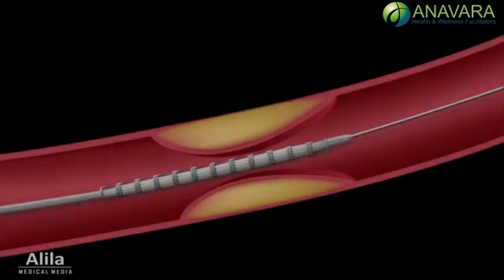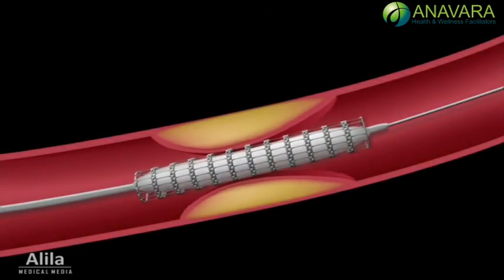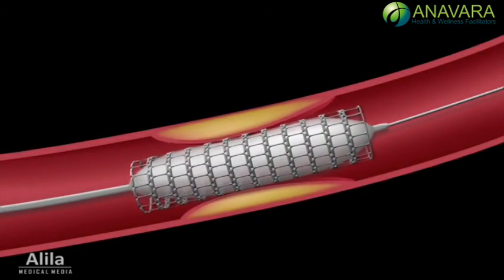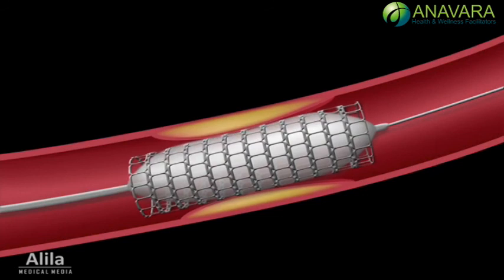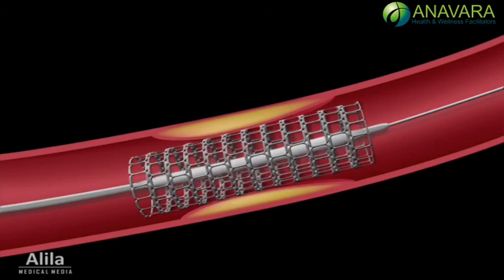In some cases, a stent is inserted together with the balloon, inflated and left in place of the plaque to keep the artery open permanently.